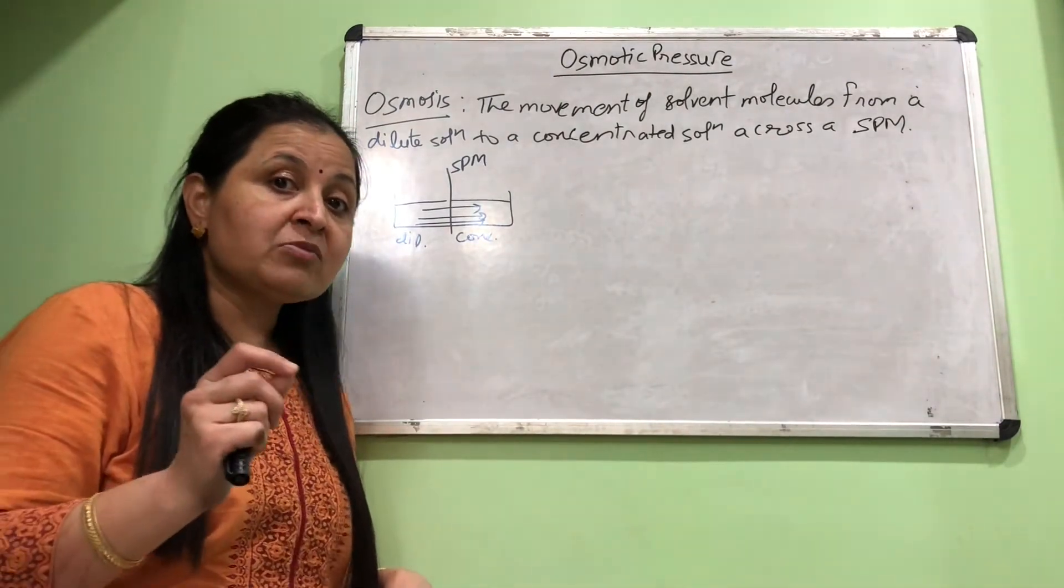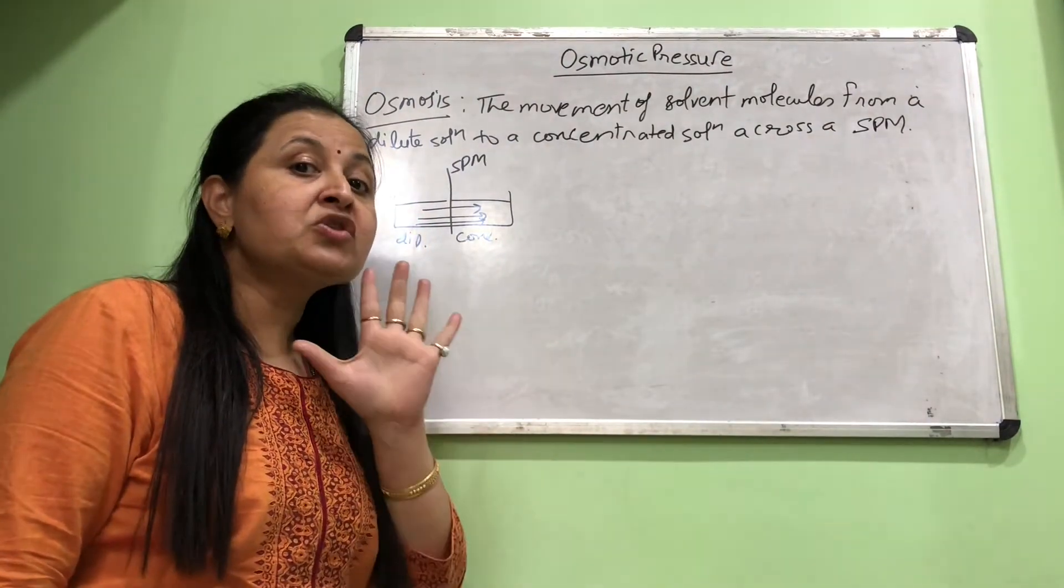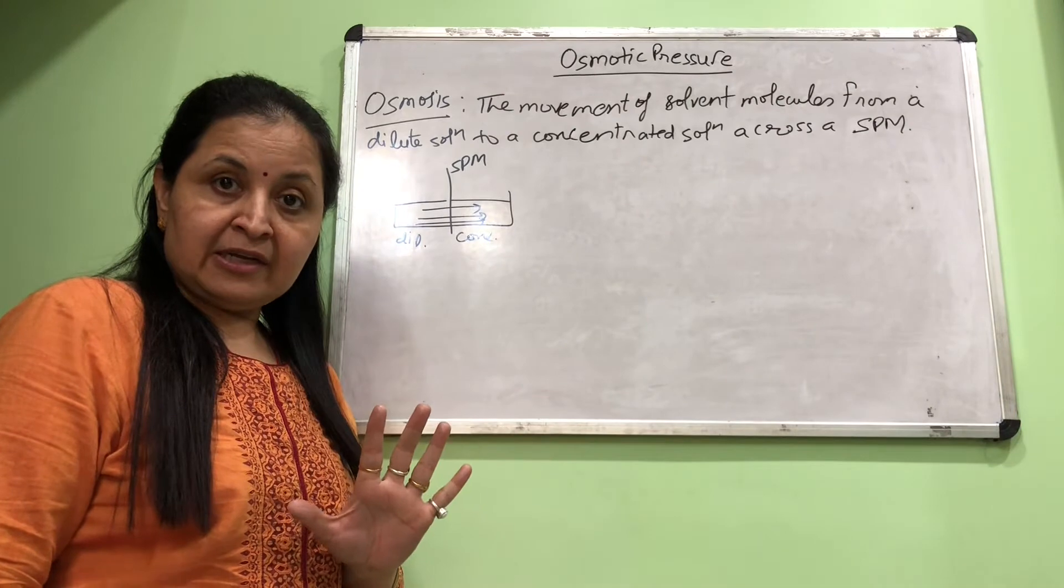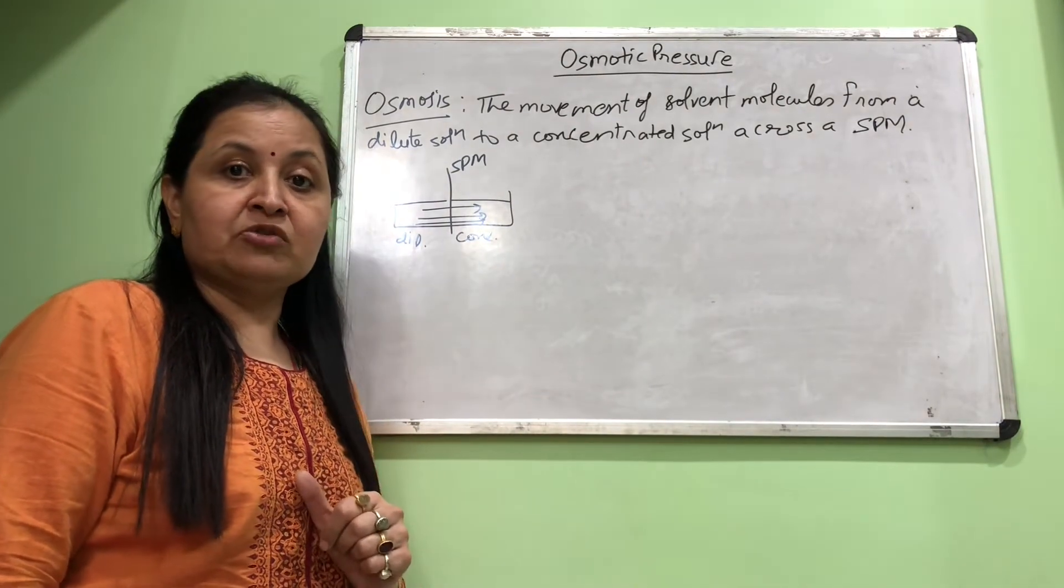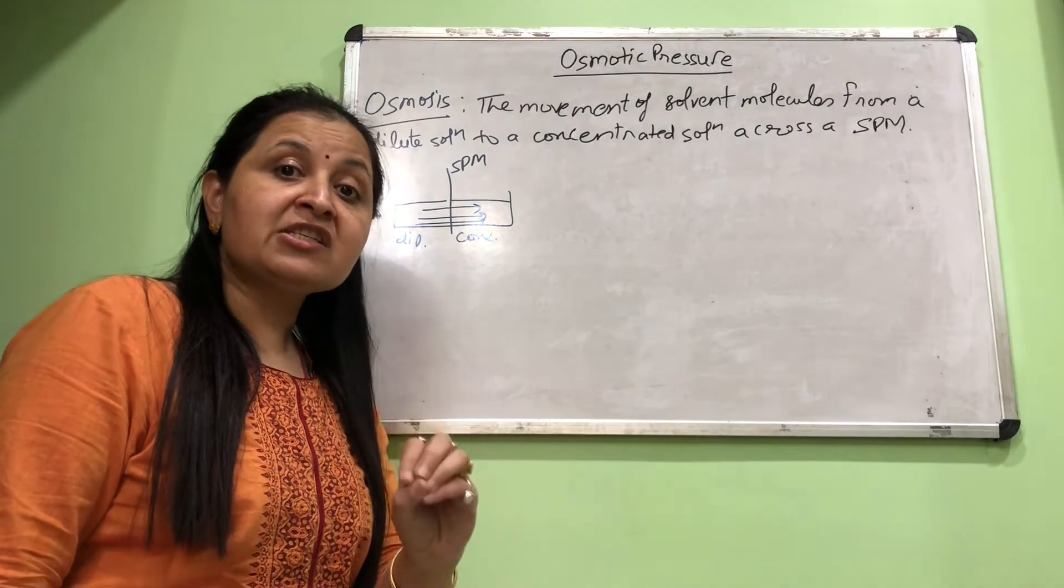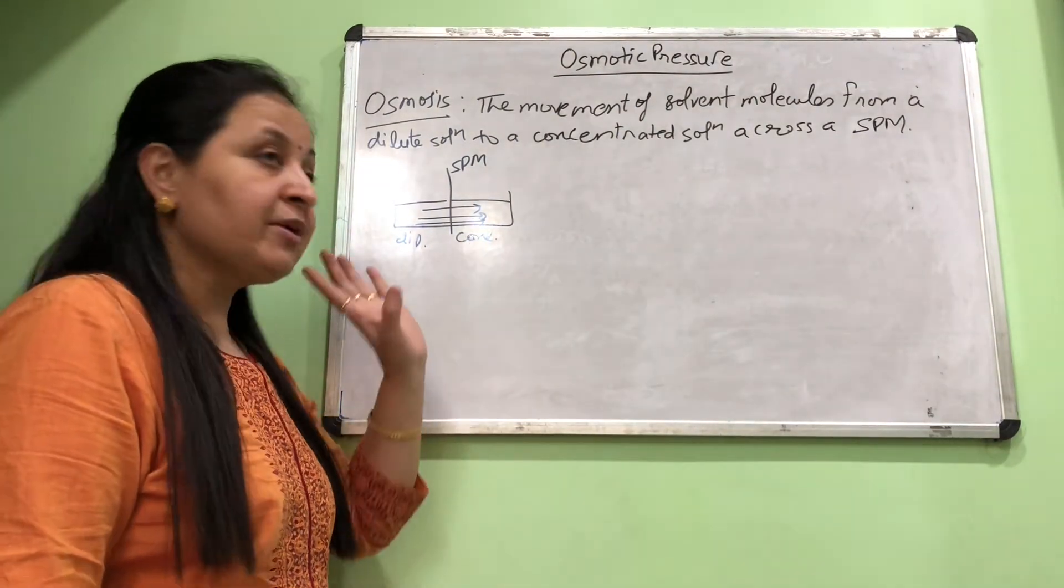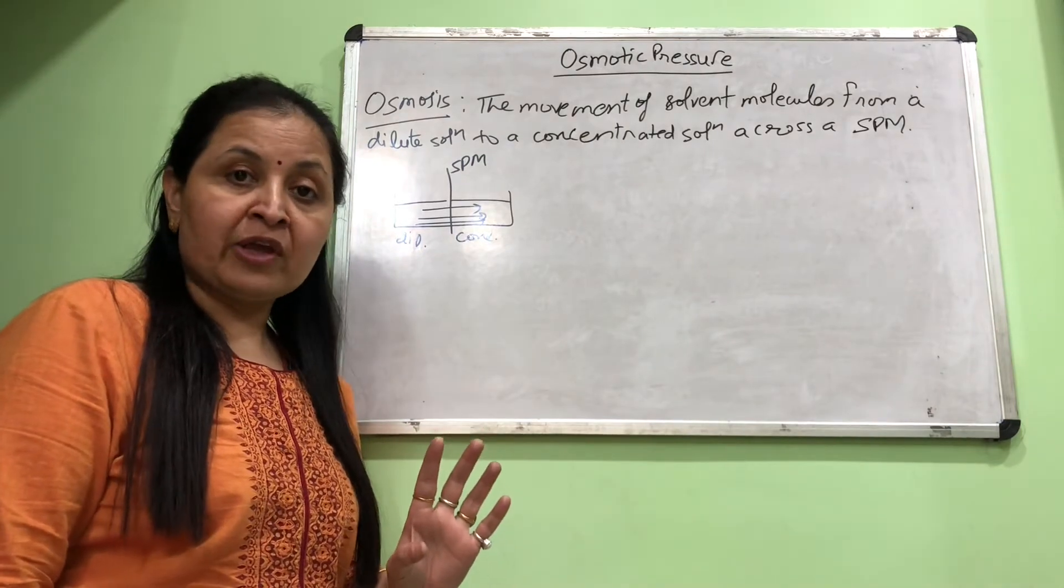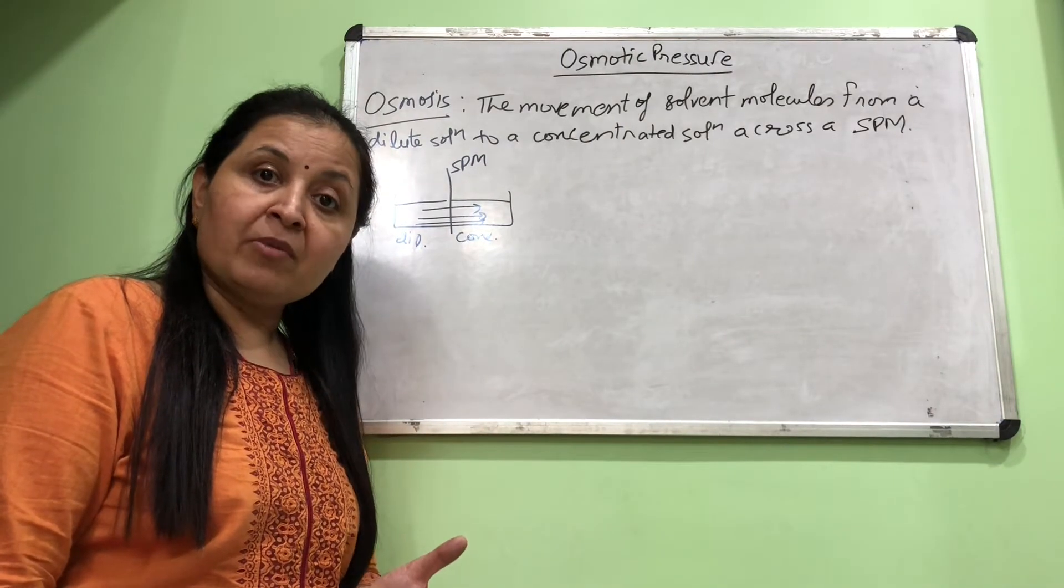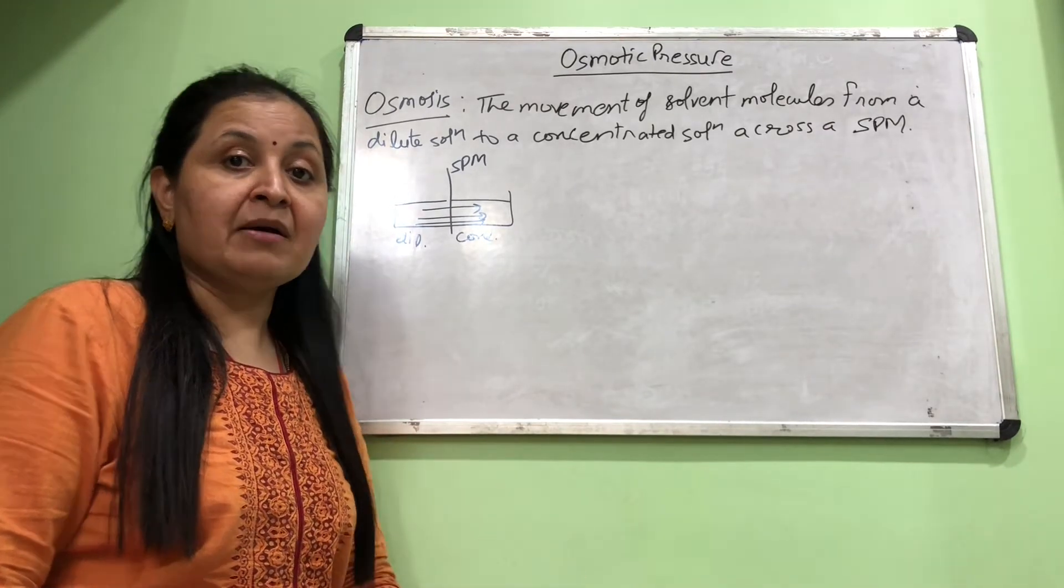The definition of osmotic pressure is: it is the minimum pressure which is just sufficient to stop osmosis. This is called the osmotic pressure of that solution. Osmotic pressure is also a colligative property which depends only on the number of particles, the number of solute particles.